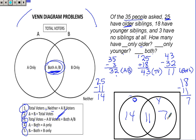I can also write 35 up here. And there are 3 that are not voting for either one, older or younger. They have no siblings. So now I have to answer my question. How many have only older? That's 14 have only older. How many have only younger? That would be 7. And how many have both? That's in the middle, 11.